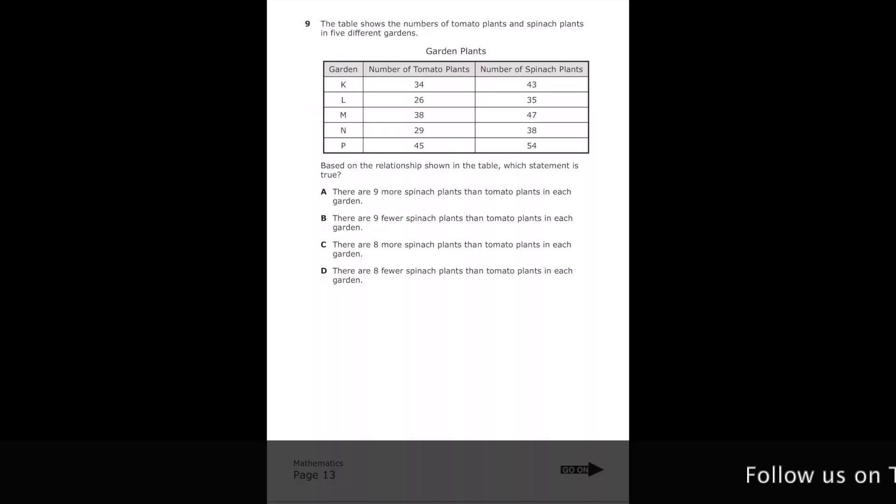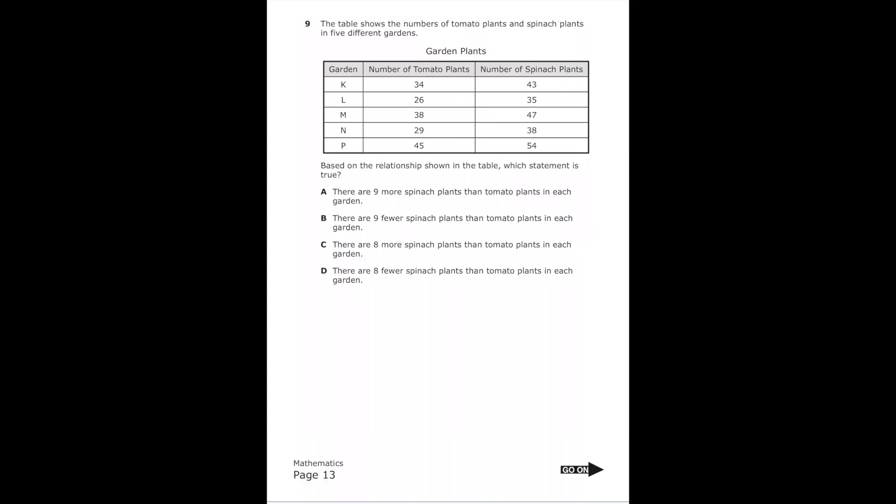Number nine. The table shows the number of tomato plants and spinach plants in five different gardens. Based on the relationship shown in the table, which statement is true? So let's just go ahead and go through each answer choice until we find the one that's correct. So letter A says there are nine more spinach plants than tomato plants in each garden. So let's check that.